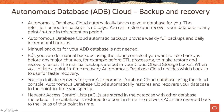You can do manual backups using the cloud console if you want to take backups before major changes — for example, before ETL processing — to make restore and recovery faster. Manual backups are stored in your cloud object storage bucket. When you initiate a point-in-time recovery, autonomous database cloud decides which backup to use for faster recovery. You can initiate recovery using the cloud console, and the service automatically restores and recovers your database to the point in time you specify.